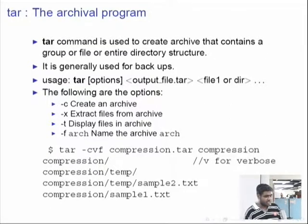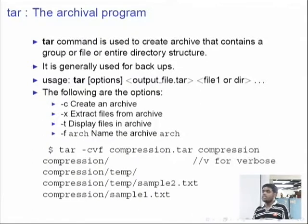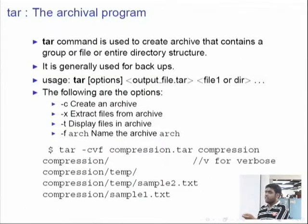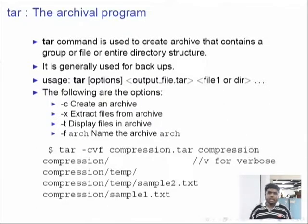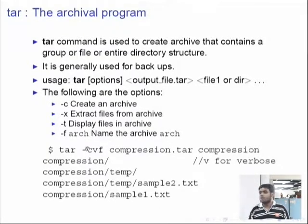Here you have seen a new format of specifying options. If there are more than one options for any Unix command, you can club them together. So instead of writing -c -v -f separately, you can combine them as -cvf. Here: c means create an archive, v is for verbose which shows the archived contents on the terminal output, and f is to specify the archive file name — in this case, compression.tar.